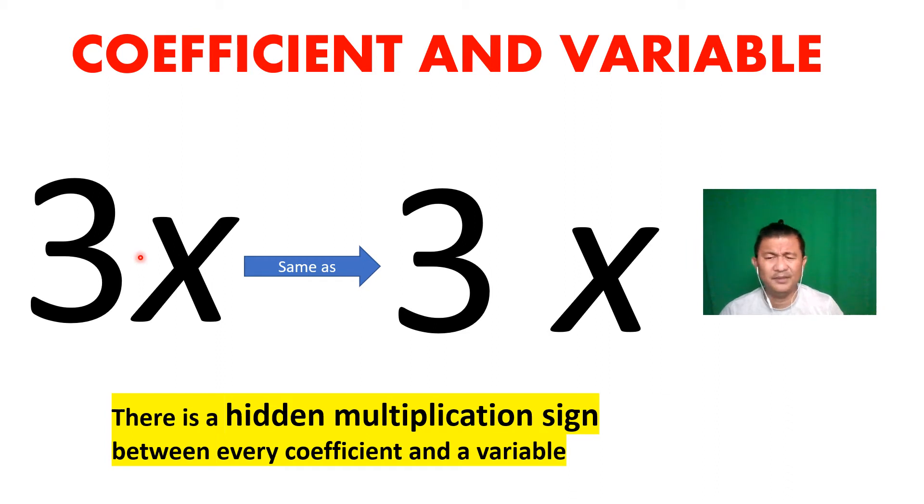What about 3x? Will I add them, subtract them, multiply? There's no symbol in between. It is times. Between a coefficient and a variable, it is always times.